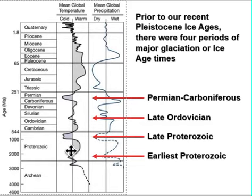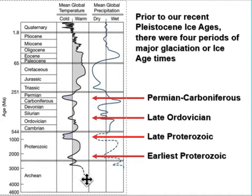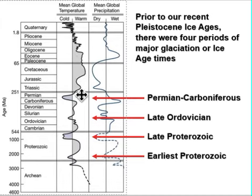You can see there have been four ice ages prior to our Pleistocene one, which is the most recent. But there have also been many greenhouse times. The biggest period of greenhouse time in Earth's history was actually during the time of the dinosaurs in the Mesozoic.